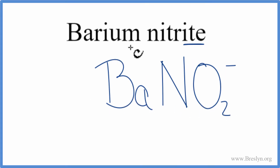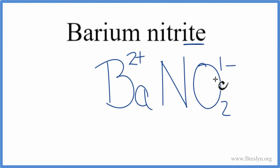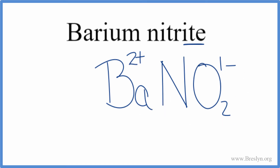We need to take the charges into account when we write the formula for barium nitrite. Barium is in group 2 on the periodic table, so it has a 2-plus ionic charge. Nitrite is 1-minus. These charges need to add up to 0 for a neutral compound — barium nitrite is a neutral compound — but right now they don't, so we can change the subscripts to make that happen.